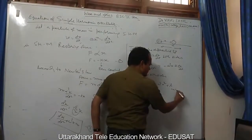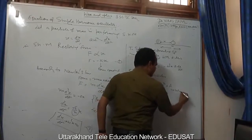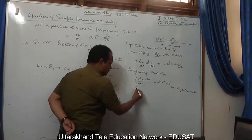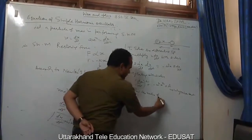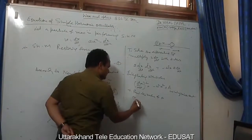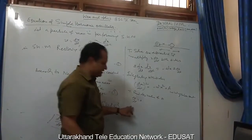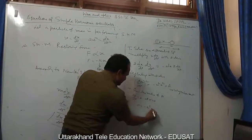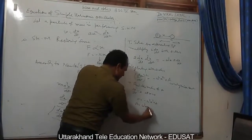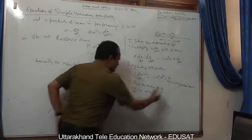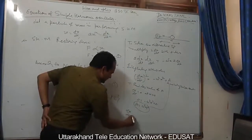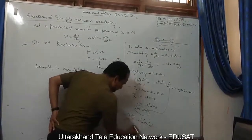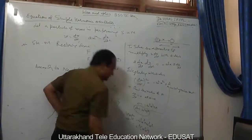This is the integration constant. To find the value of A, we apply the condition that velocity dx/dt = 0 at the extreme point where x = a. Substituting, we get A = ω²a². Substituting this value back, the equation reduces to (dx/dt)² = ω²(a² − x²), with ω² factored out.